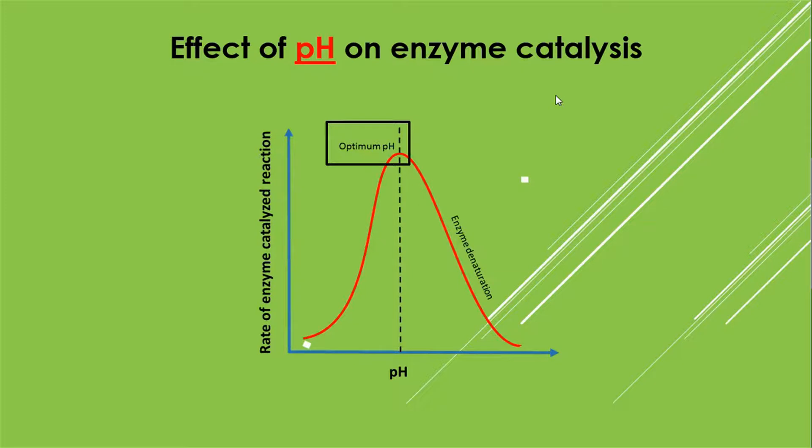All enzymes work to their maximum rate at a small range of pH which is called optimum pH. A minor change in this pH induces denaturation or complete blockage of enzyme catalysis. Each enzyme has its own optimum pH which is unique to it.